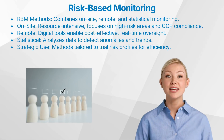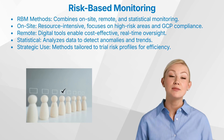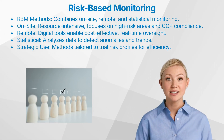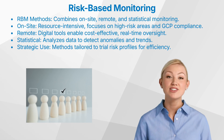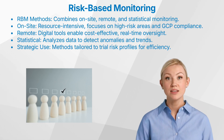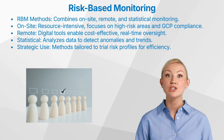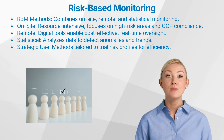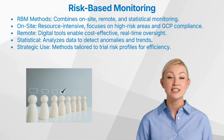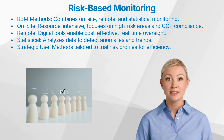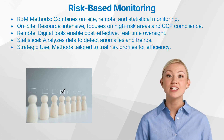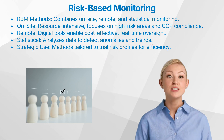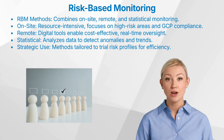Let us start diving into the core components of risk-based monitoring. Risk-based monitoring integrates three primary monitoring methods: on-site, remote, and centralized statistical monitoring. Each has unique strengths and should be applied based on the trial's risk profile. On-site monitoring — this traditional method involves in-person visits to verify source data and ensure GCP compliance. While effective for detecting unreported issues and maintaining site engagement, it is resource-intensive and should be reserved for high-risk processes.